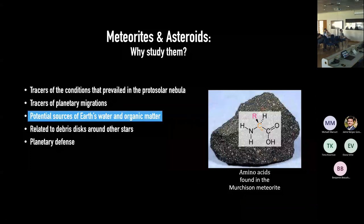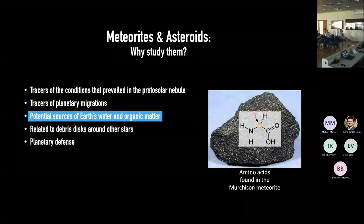Small bodies are also a source of Earth's water and organic matter. Amino acids, the building blocks for proteins and for every living thing on Earth, have been found at the surface of these objects. Prebiotic chemistry is happening in space on these objects, and it's possible that the complex organic molecules that led to the emergence of life on Earth were brought by them.